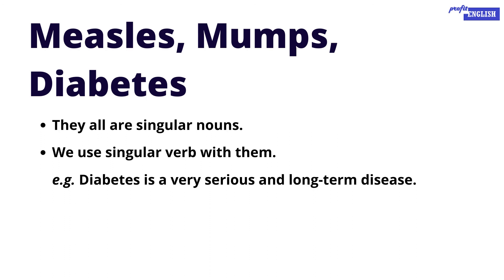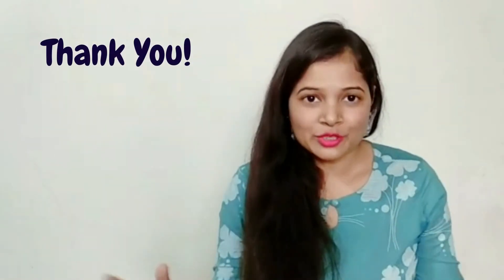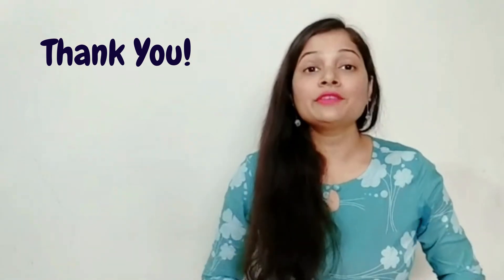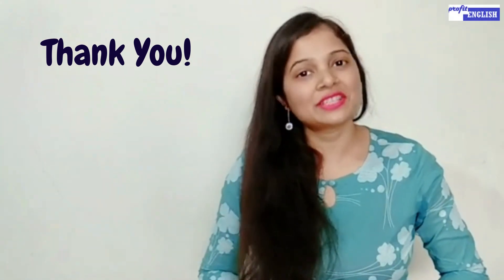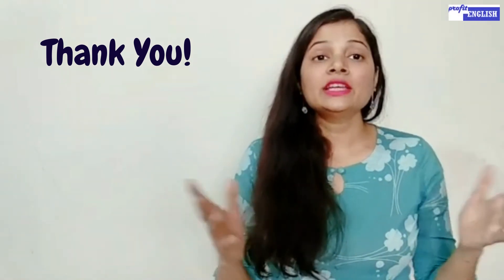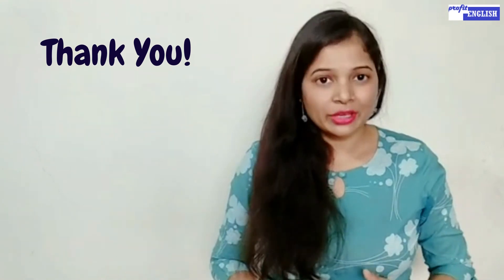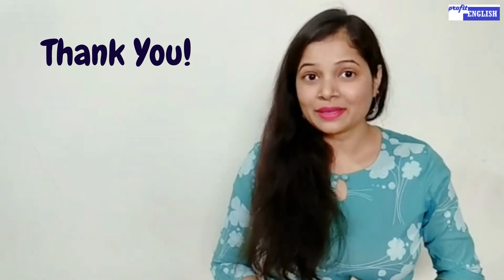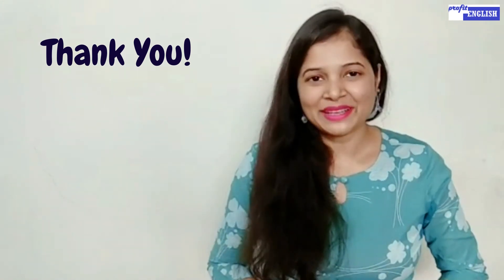Similarly, disease names like measles, mumps, and diabetes are singular nouns, and we always use a singular verb with them. Example: 'Diabetes is a very serious and long-term disease.' Thanks for watching this video. If you enjoyed it, please like, share, and subscribe to my channel. If you have any queries or doubts, please drop them in the comment box. Bye-bye!